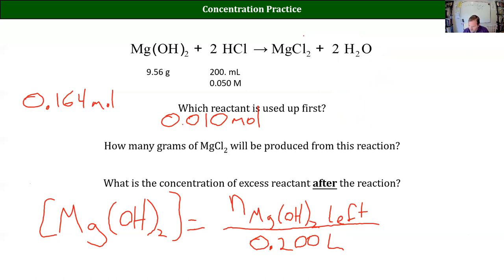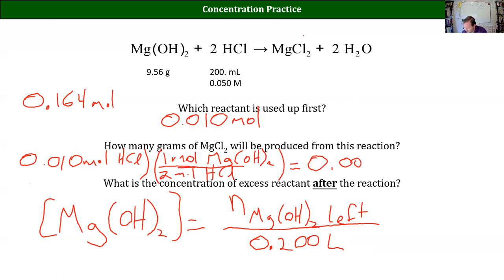So if we used up all of our HCl, so 0.010 moles HCl for every 2 moles HCl, one mole of magnesium hydroxide used. So to find our concentration of excess reactant, just take moles we started with, subtract the moles that we use.